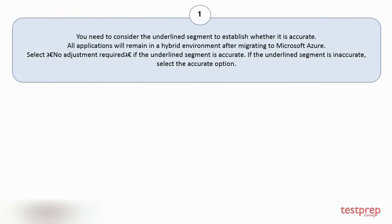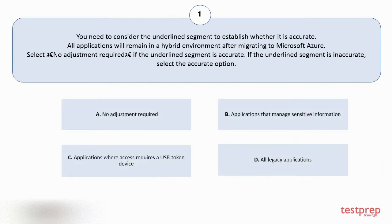Question number one. You need to consider the underlined segment to establish whether it is accurate. All applications will remain in a hybrid environment after migrating to Microsoft Azure. Select the given adjustment if the underlined segment is accurate; if inaccurate, select the accurate option. Your options are: A. No adjustment required. B. Applications that manage sensitive information. C. Applications where access requires a USB token device. D. All legacy applications.